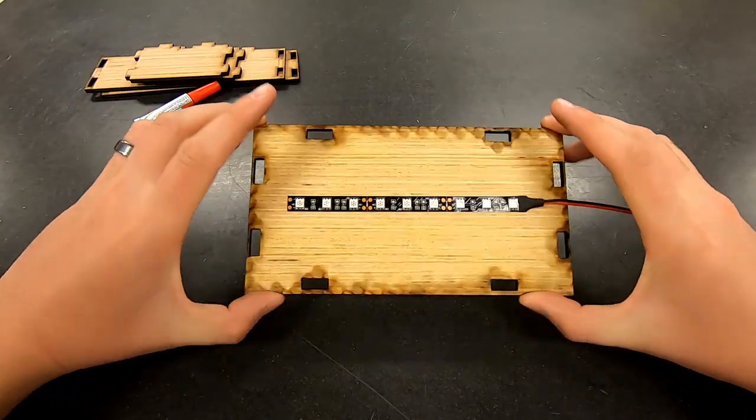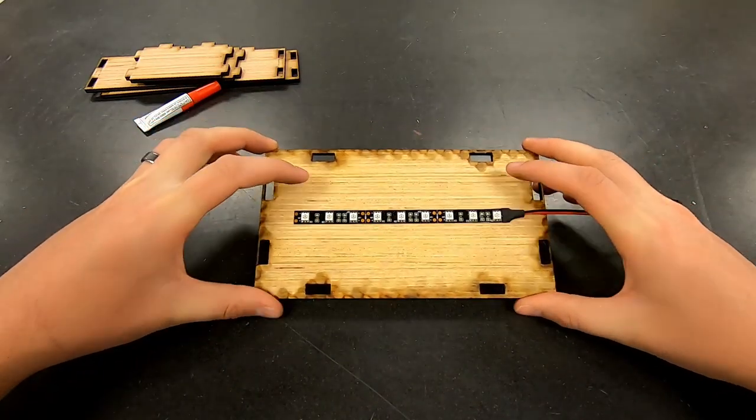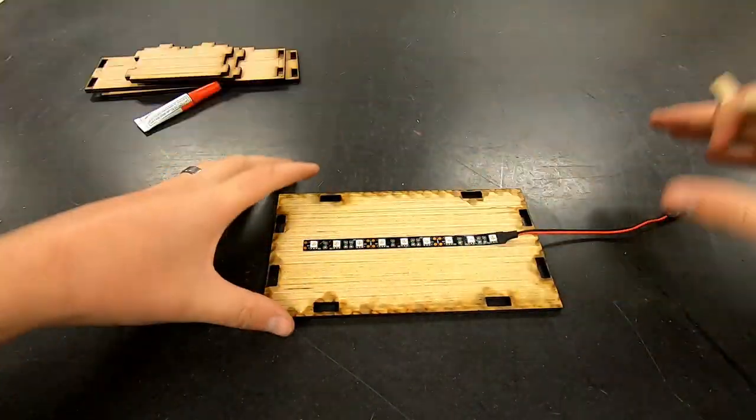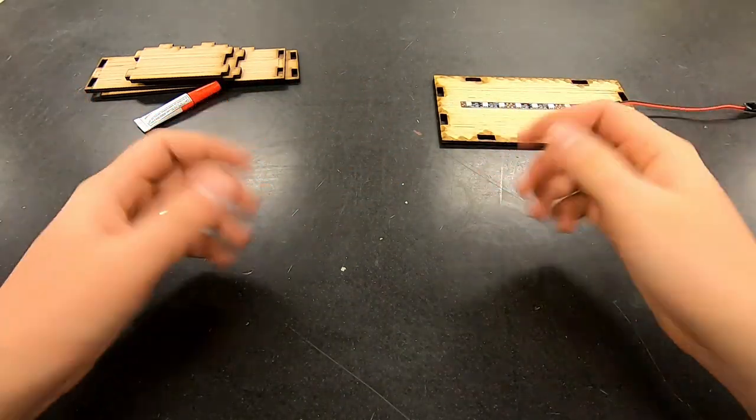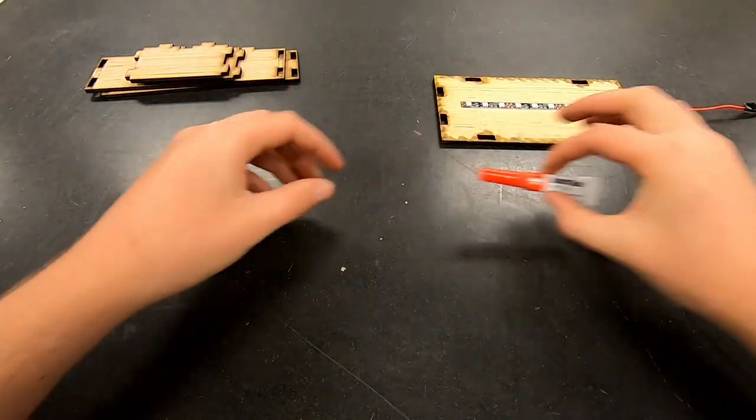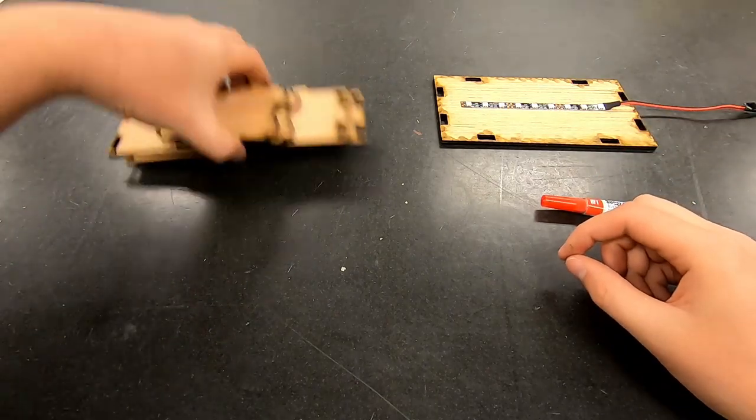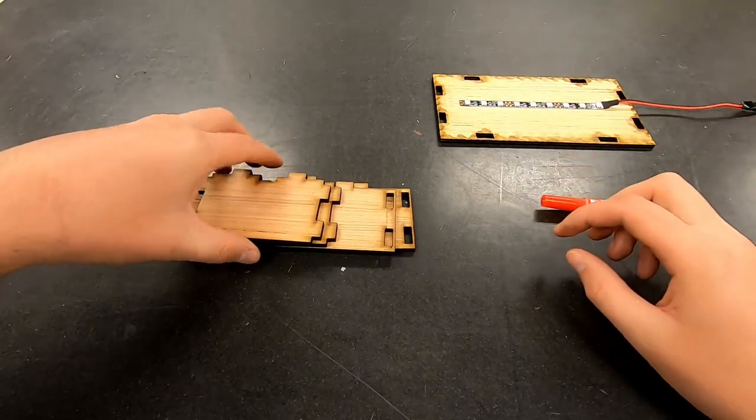Simply press it into place and it's good to go. Now we can go ahead and set this off to the side and we'll start assembling the base pieces. So for this you'll need your super glue as well as the rest of the pieces.